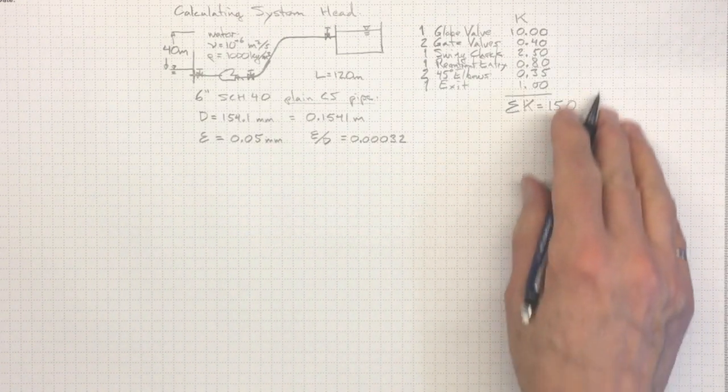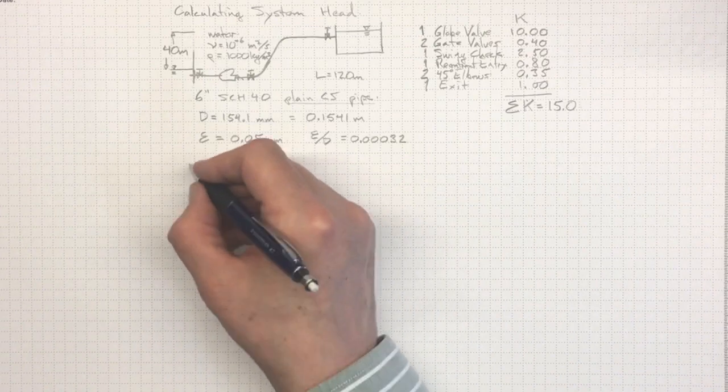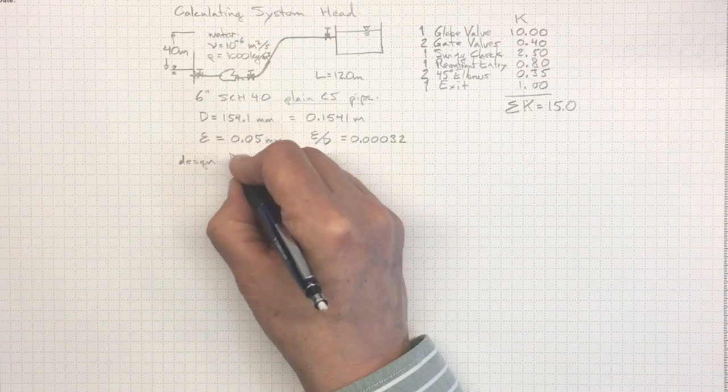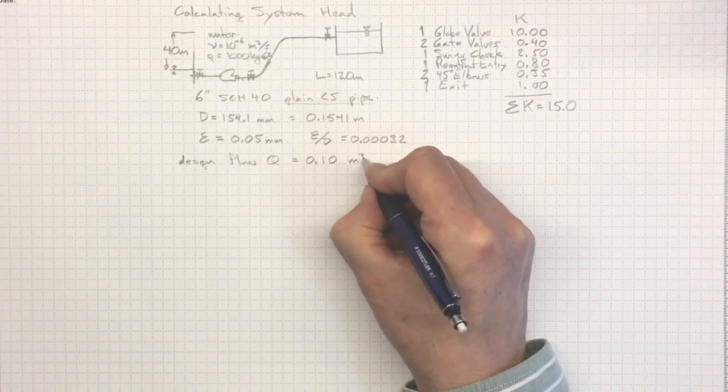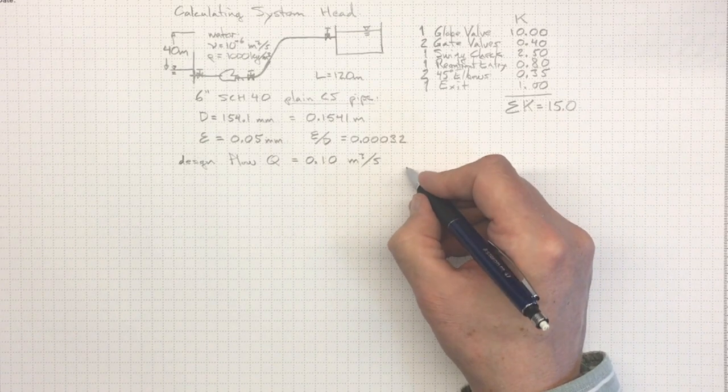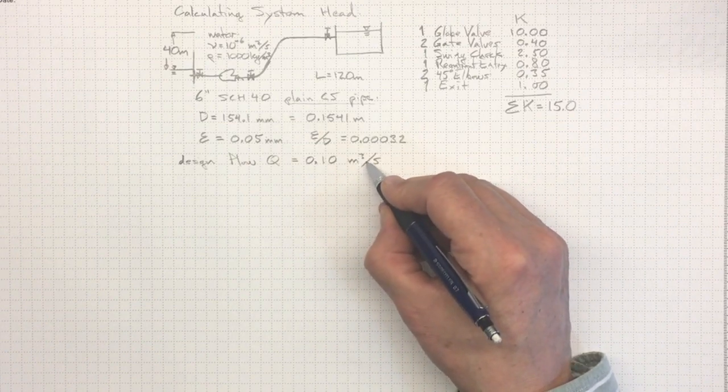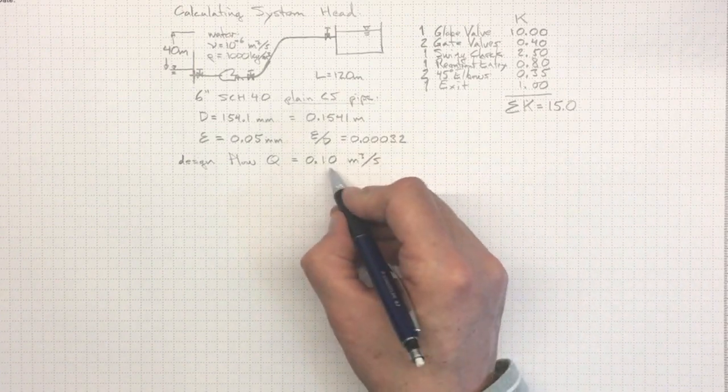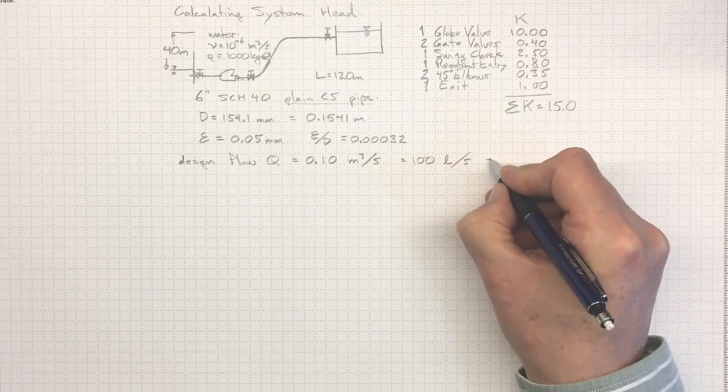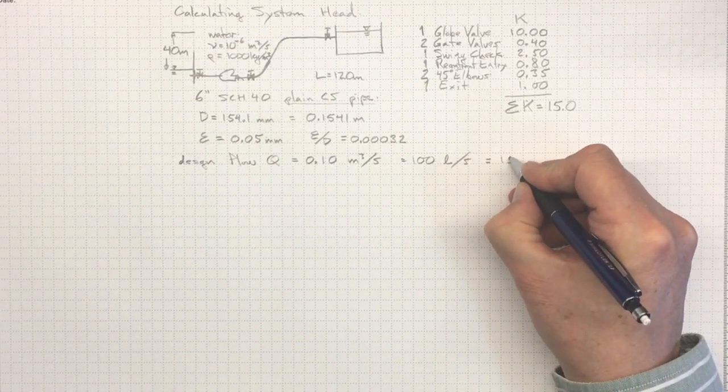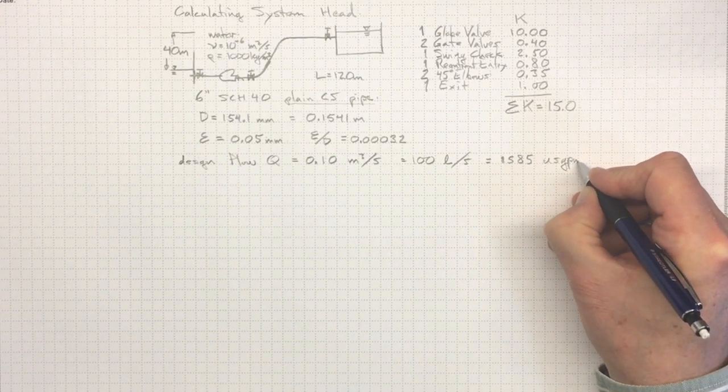Now, we've got a piping system here. And I picked that 6-inch pipe as probably being okay to meet my design flow rate of about 0.1 cubic meters per second. Now, 0.1 cubic meters per second may seem like a small number. It's a fraction of a cubic meter per second. But that's actually quite a large flow of water. 0.1 cubic meters, that's 100 liters every second. Or, in units that you'll see fairly commonly, 1,585 U.S. gallons per minute.